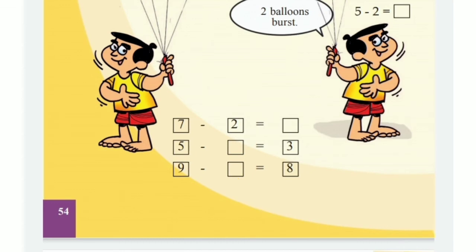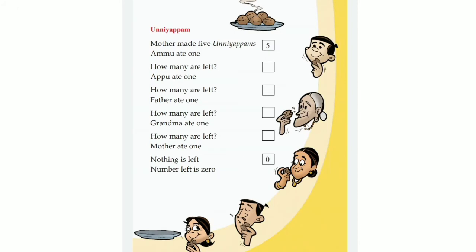Here you have a rhyme — Unniapam. Children, all of you see the unniapams in the plate? How many unniapams are here? 1, 2, 3, 4, 5 unniapams. Let's start our rhyme. Mother made 5 unniapams. Ammu ate 1. How many are left? Yes, 4. 5 minus 1 is equal to 4.